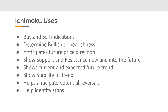In terms of using the Ichimoku method, there are quite a few different uses for it. It can give you buy and sell indications in multiple ways. You can use it to determine bullishness or bearishness, anticipate future price direction, show support and resistance now and into the future, show the current and expected future trends, show the stability of trend, identify potential reversals, and identify stops.